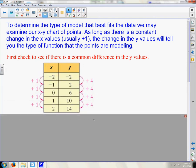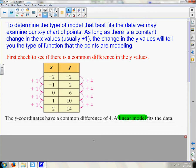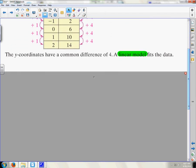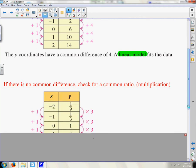First check to see if there's a common difference. Here, these are all going up by one. The Y's are all going up by four. So this we know right off the bat is a linear model. And hopefully, you would be able to write the equation if you remember this.